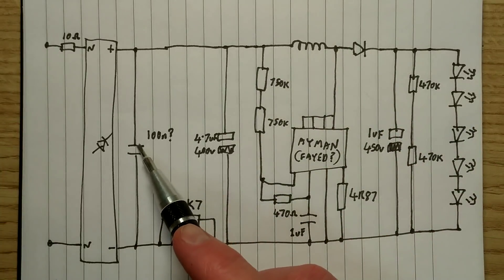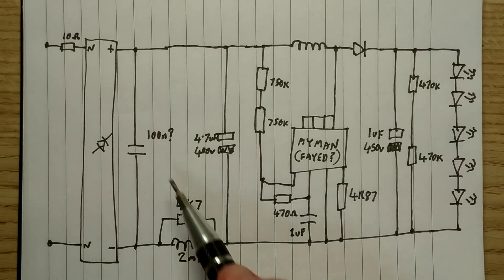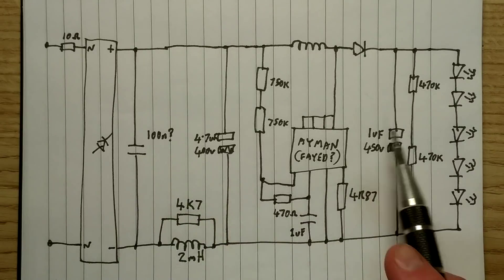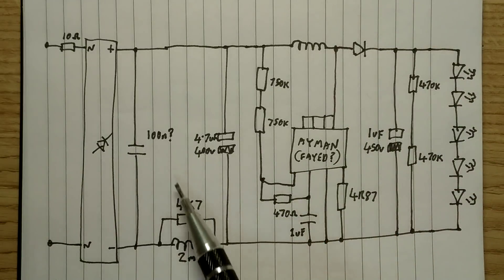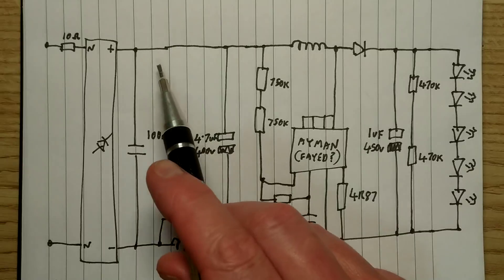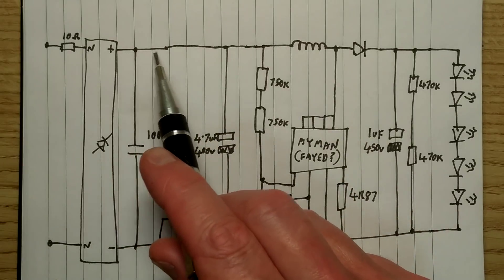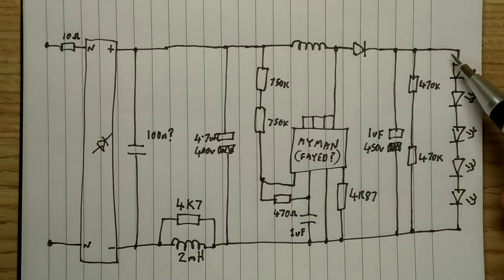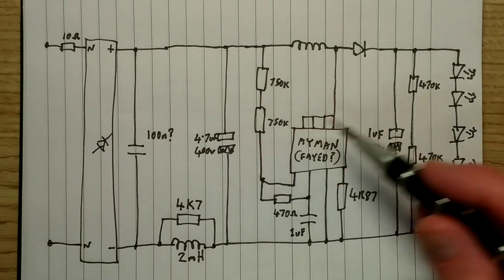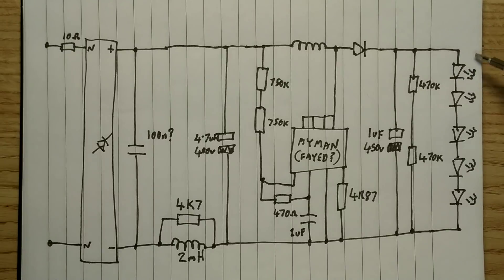And that provides the power supply to the circuit. Initially, I thought this 100 nanofarad capacitor and this inductor were for filtering of noise going back onto the mains, which it probably is doing. But I wonder if that's partly also to filter out spikes in the circuit, because the way this circuit works, it's got an inductor, it's got a diode, and it's boosting the voltage up to a higher voltage.